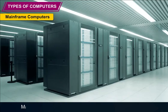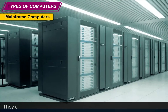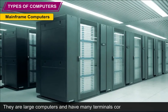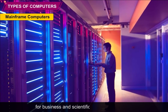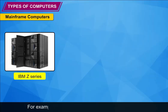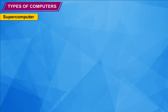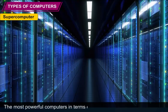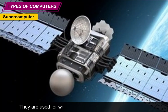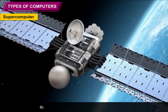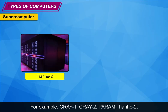Mainframe computers have faster speed and larger storage capacity than minicomputers. They are large computers with many terminals connected to a network, used in big organizations mostly for business and scientific research purposes. Examples include IBM Z-Series, PDP-10, and System Z-10. Supercomputers are the most powerful computers in terms of performance. They are very expensive and are used for weather forecasting and defense purposes, such as controlling missiles and satellites. Examples include Cray-1, Cray-2, Param, Sunway, and Tianhe.